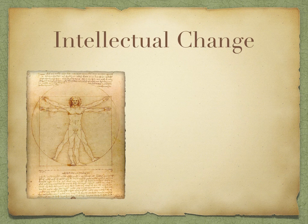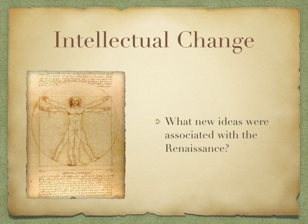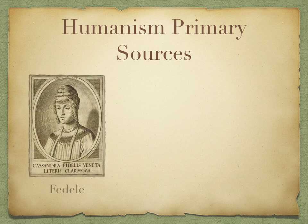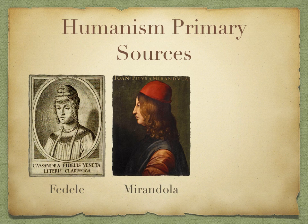After the politics and economics, we turn to the intellectual parts of the Renaissance — the intellectual change. The question here is: what were the new ideas associated with the Renaissance? The star here is humanism. Humanism is a critical piece of any discussion about the Renaissance and always features on the AP test — you need to get your arms around what humanism is. This section goes into that in some detail. You also get a lot of really good primary sources here, including Fidele, one of the first female writers we'll talk about, who argues for the values of humanist learning for women.